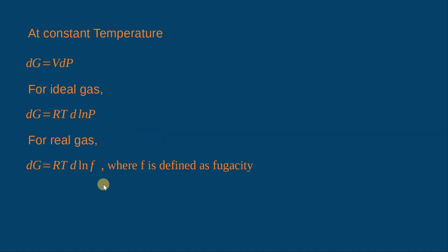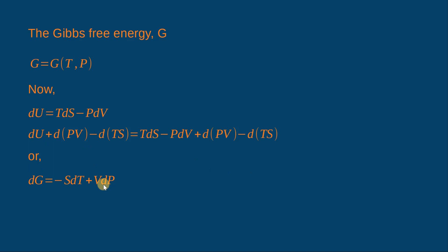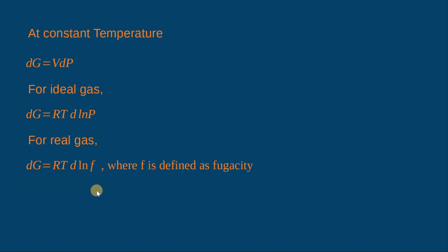At constant temperature, this equation can be written as dG = VdP. For an ideal gas we have dG = RT d(ln P), because we can replace V as RT/P and dP/P can be written as d(ln P).